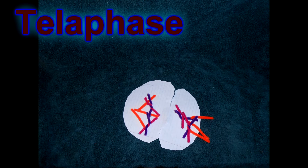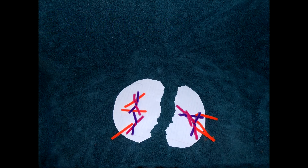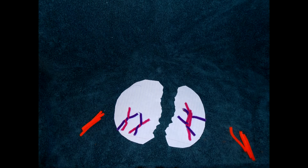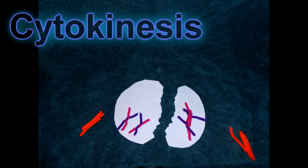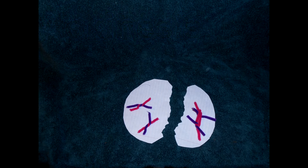Finally, telophase. Here you can observe the chromosomes losing their shape and bundling back up with each other as the spindle fibers start to disappear. Cytokinesis starts to occur here, which is a division of the cytoplasm.